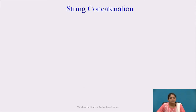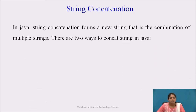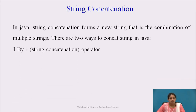Next is string concatenation. In Java, string concatenation forms a new string that is a combination of multiple strings — you can join multiple strings together. There are two ways to concatenate in Java: first, by using the plus operator to add two or more strings, and second, by using the inbuilt concat method.